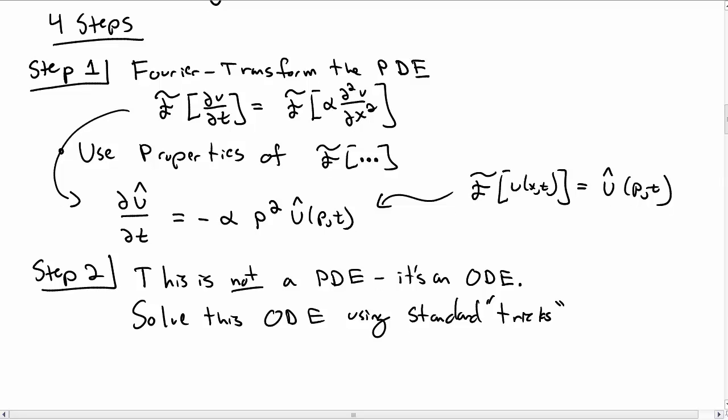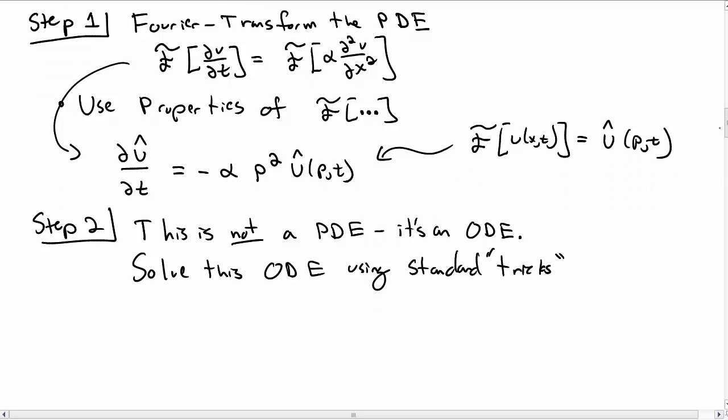Just rewriting this differential equation, we obtain du hat dt is equal to minus alpha p squared u hat. This has a nice easy solution, u hat of p comma t is some constant c hat, which could be a function of p, e to the minus alpha p squared t.